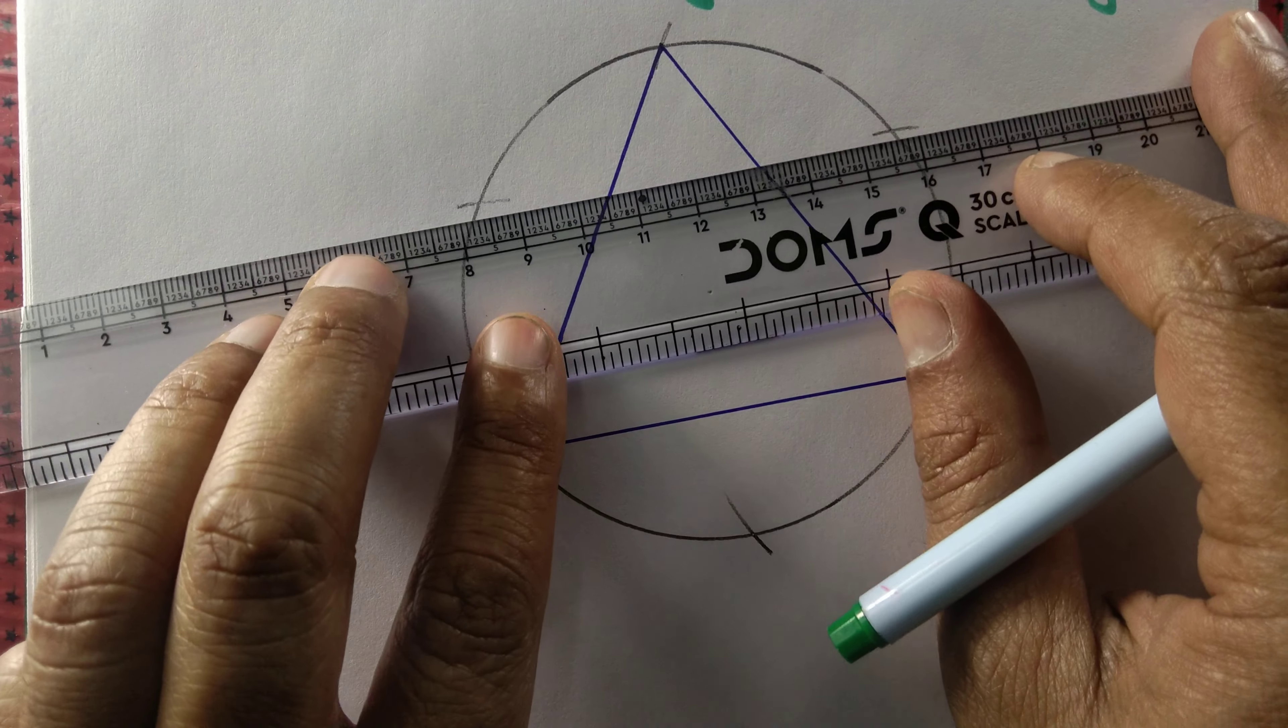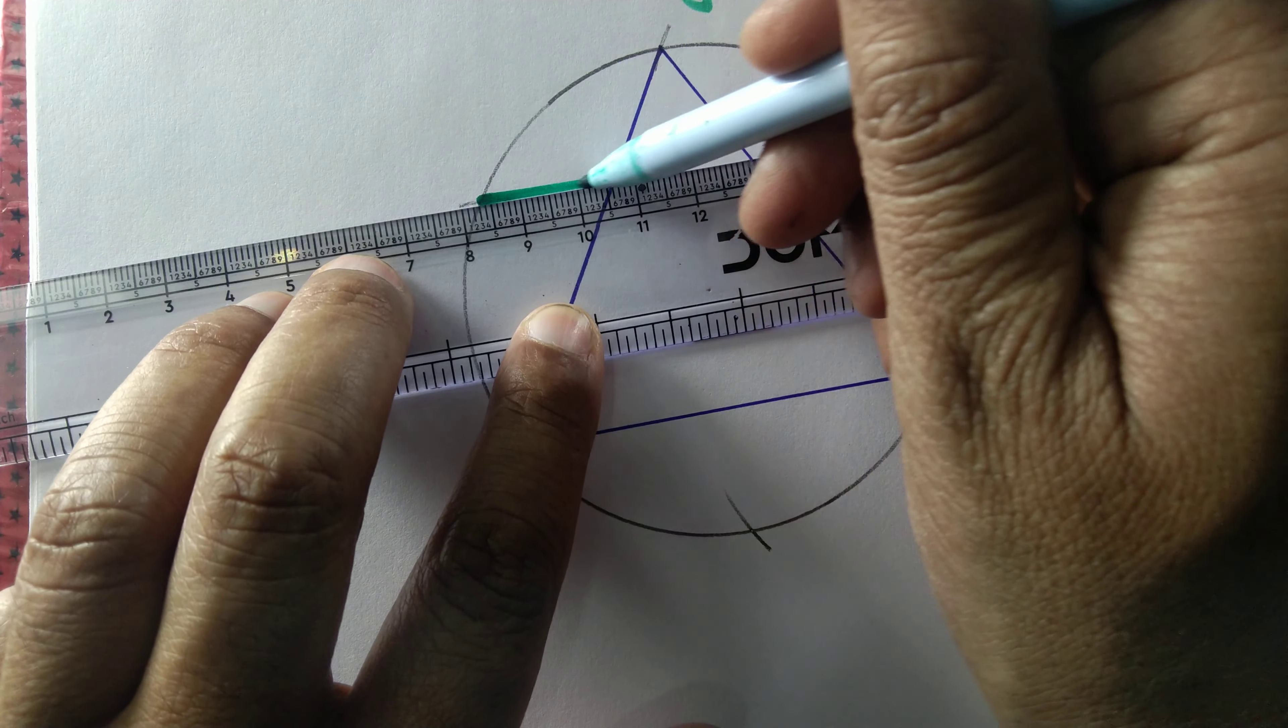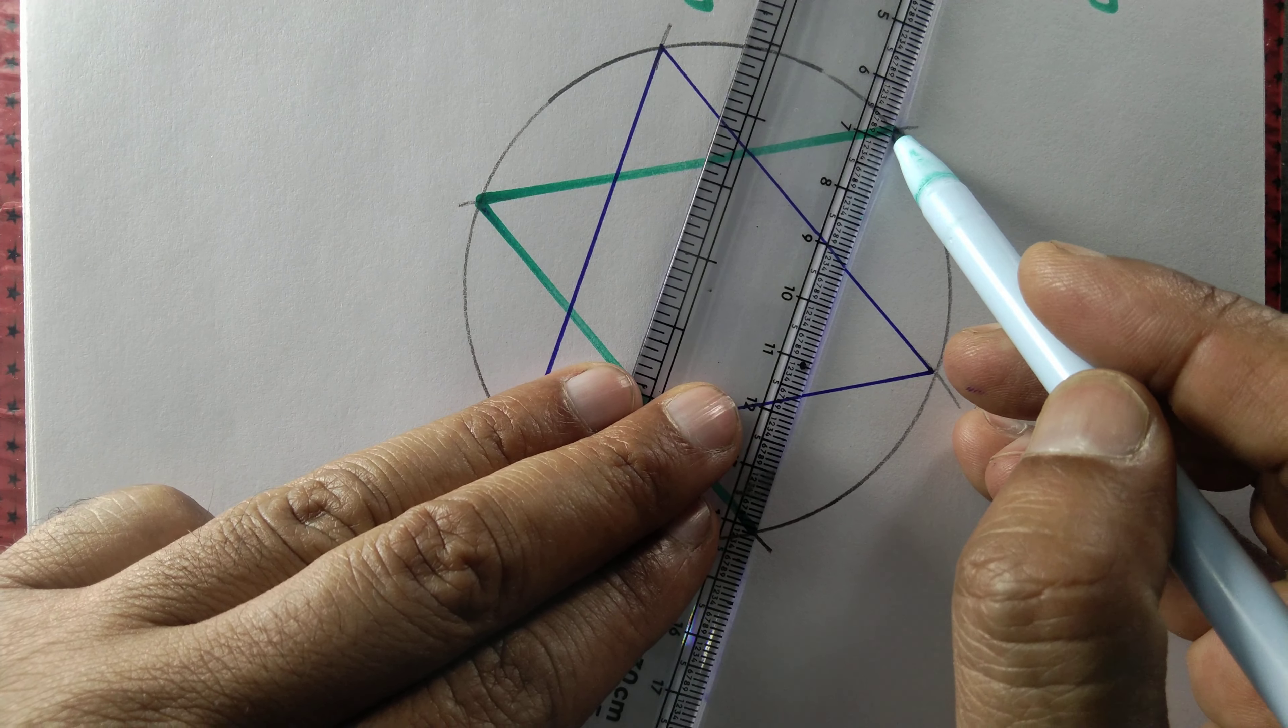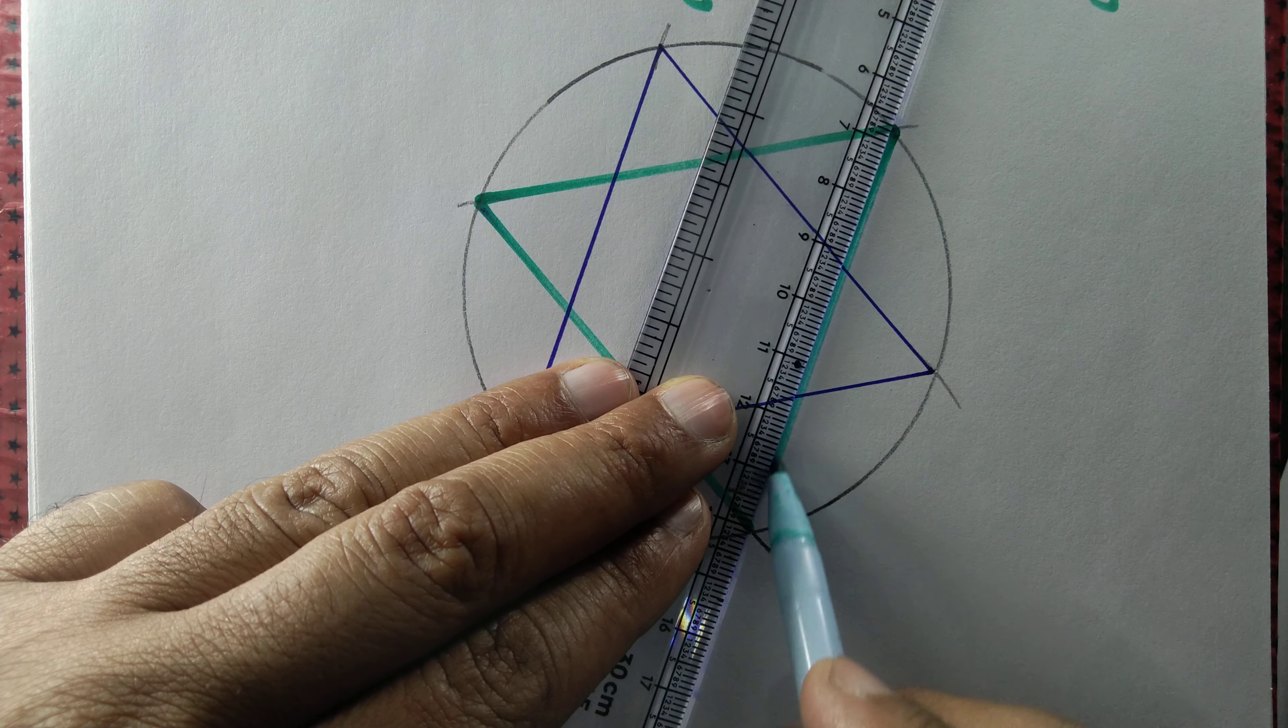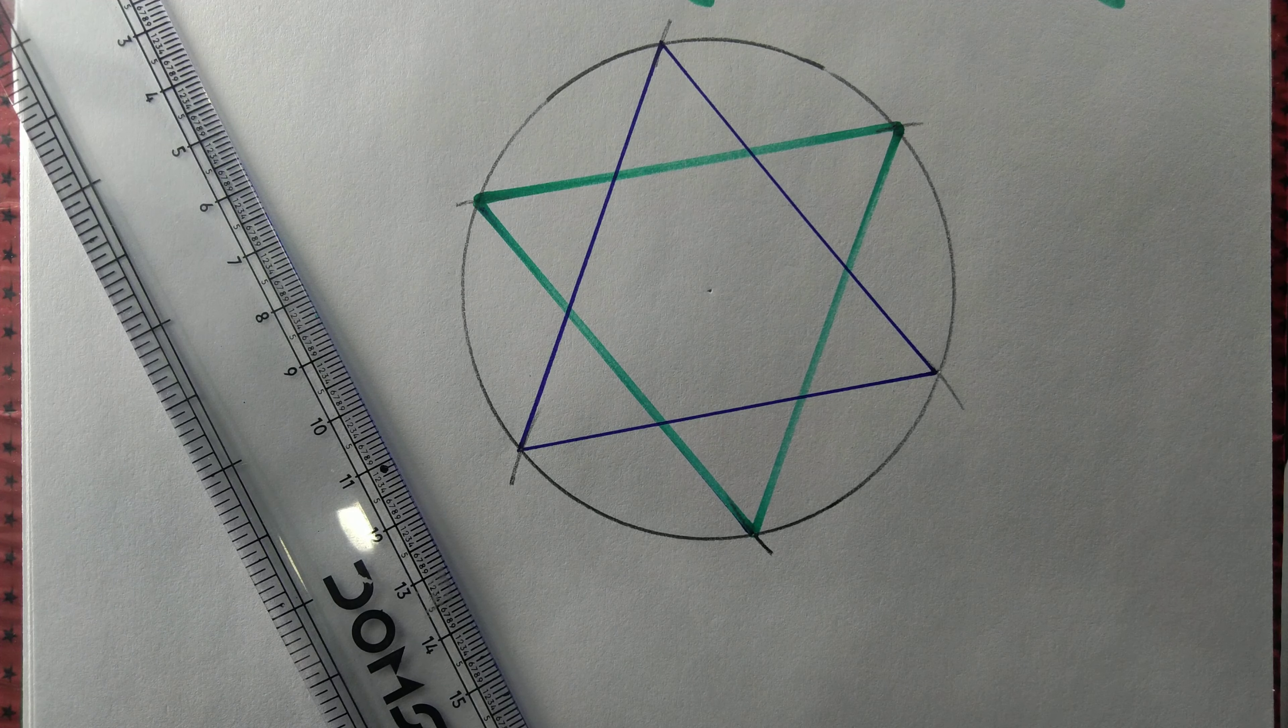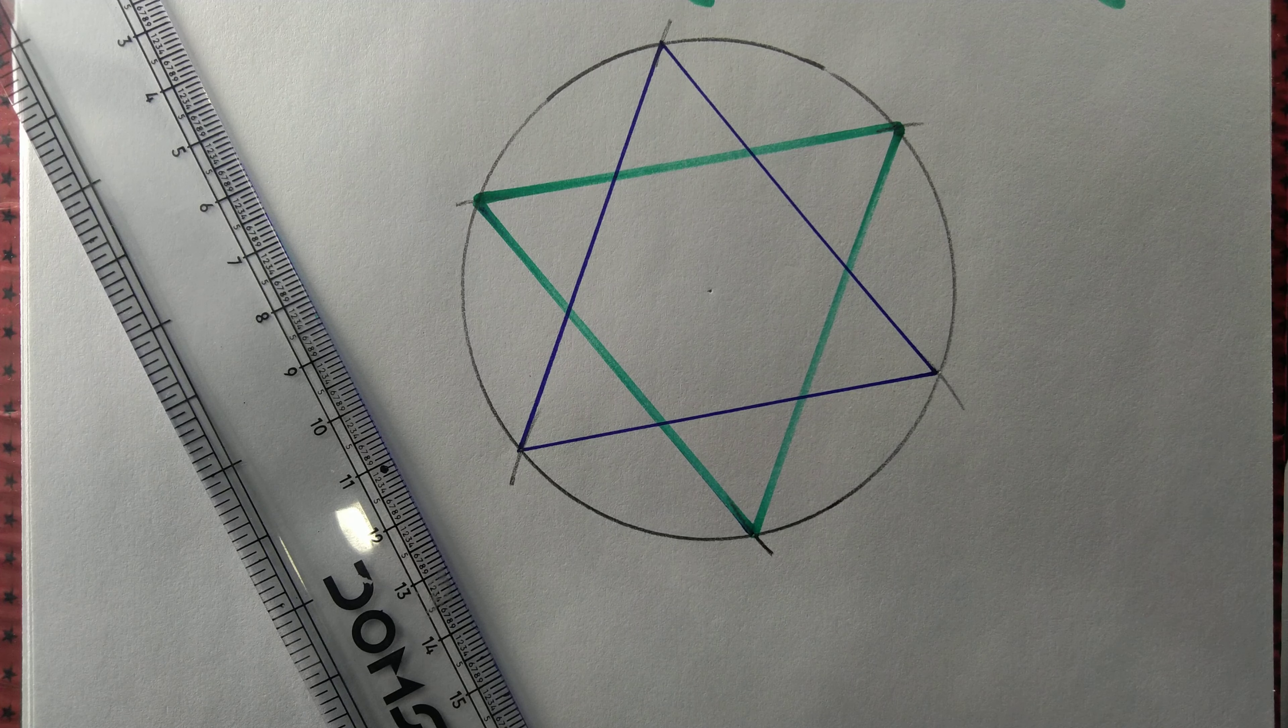Let us join the other three intersection points of the arcs and circle. So we join the other three intersection points to get another equilateral triangle, and that gives us a regular hexagram.